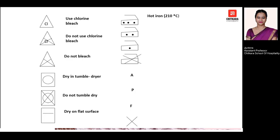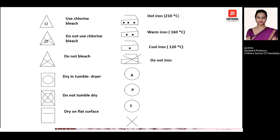For the ironing symbol, if your iron has three dots, it means you have to use a hot iron, approximately 210°C. If it carries two dots, you have to use a warm iron at 160°C. If it has only one single dot, it means cool iron at 120°C. And very simply, if your iron symbol has a cross mark, it means that garment does not require ironing at all.